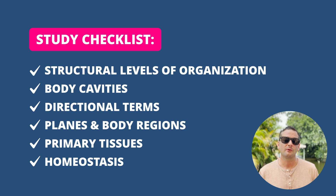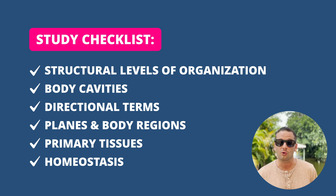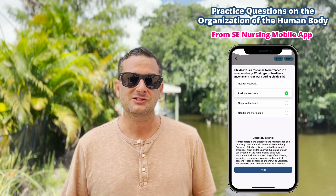Important things to know include the seven levels of organization, all the way from chemical to organism, body cavities and related terminology, words like distal, dorsal, midline, and prone position. You'll also need to be familiar with the body planes and the four types of human tissue.